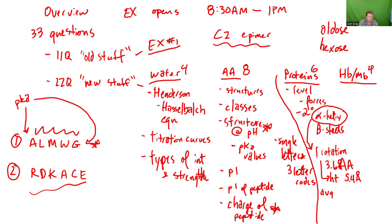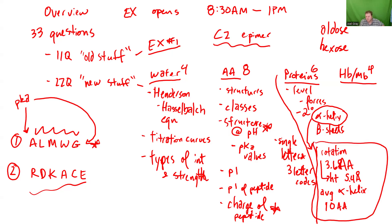All of this information is useful if I ask: an alpha helix with 10 rotations — how many amino acids are required? Your answer would be about 36, because each rotation is 3.6 amino acids. How tall is that? If it has 10 rotations and each rotation is approximately 5.4 angstroms, it's 54 angstroms. Those sorts of calculations will be on the exam.